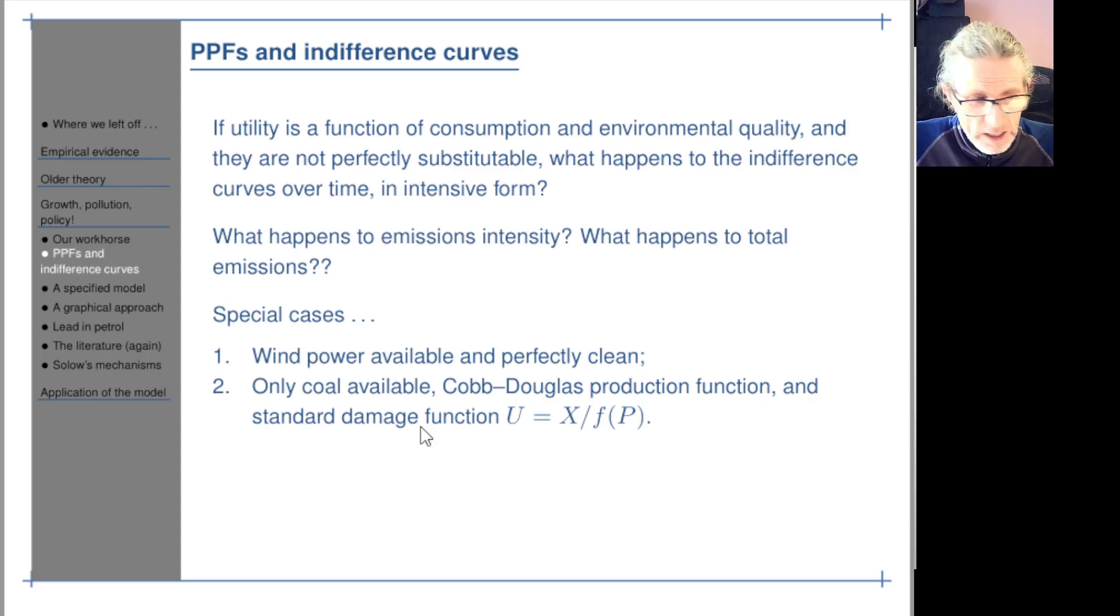What about utility? So if P is going up this way, Q will be going down this way. And if utility is a function of consumption, X, net production of the final good, and environmental quality, Q, what should the indifference curves look like? Where do we really want to be? We want to be up here. And where do we not want to be? We don't want to be down here with zero environmental quality and zero X, zero consumption.